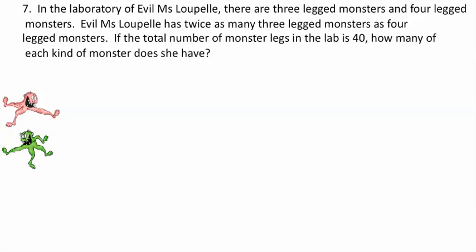Question 7. In the laboratory of Evil Ms. Lupel, there are three-legged monsters and four-legged monsters. Evil Ms. Lupel has twice as many three-legged monsters as four-legged monsters. If the total number of monster legs in the lab is 40, how many of each kind of monster does she have?